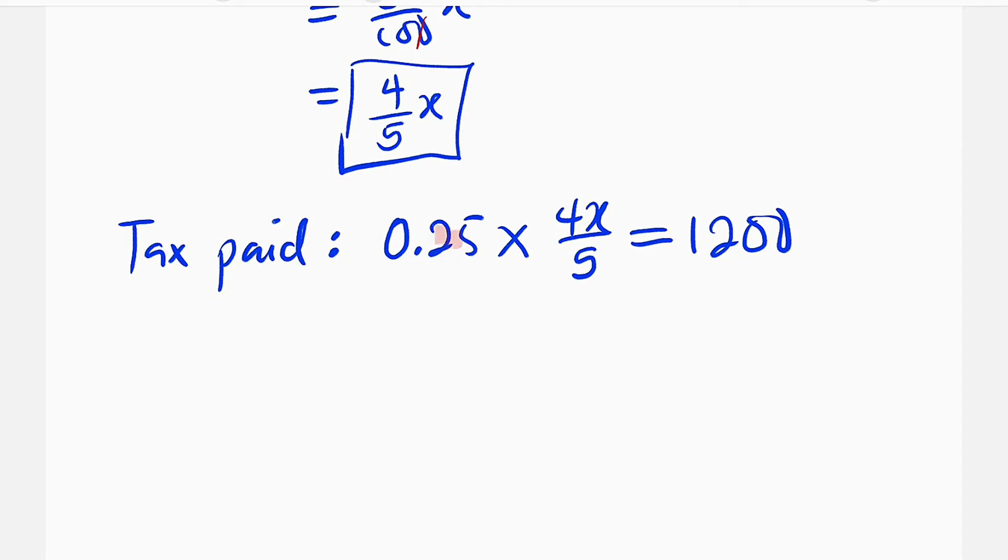Then from here, 0.25 multiplied by 4 will give us 1, and 1 divided by 5 will give us 0.2. So this is equal to 0.2X, and this is equal to 1,200.